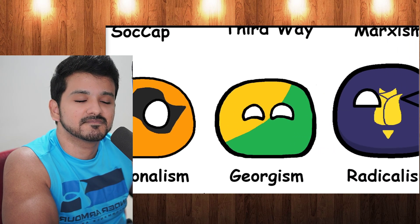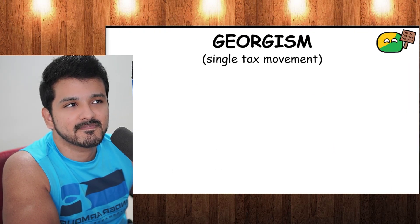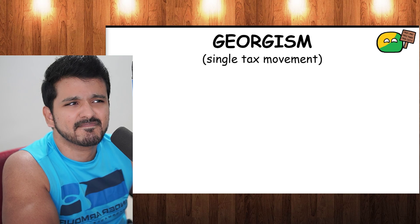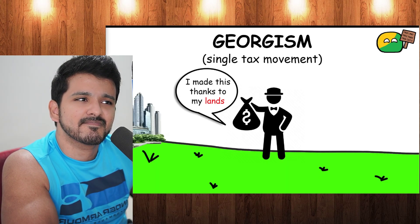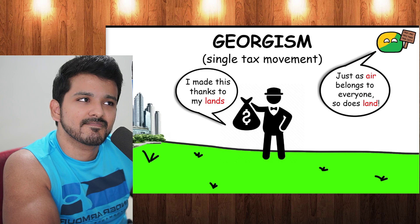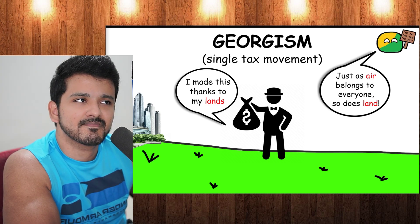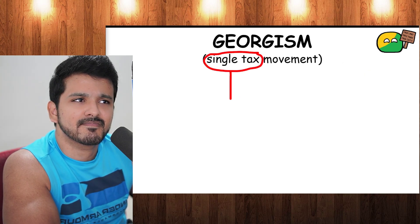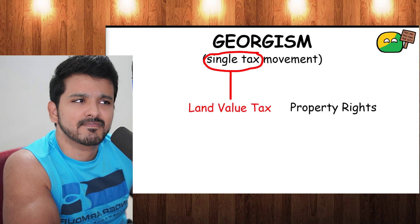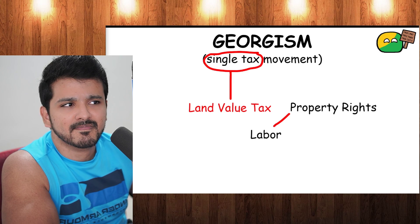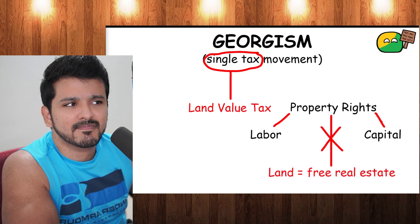Georgeism, also known as the single tax movement, thinks that although people should own the value they produce themselves, the value derived from land should belong equally to all members of society. It believes there should be only one tax — the land value tax — because it views property rights as only extending to the properties of labor and capital. And since land is neither, it's essentially free real estate.